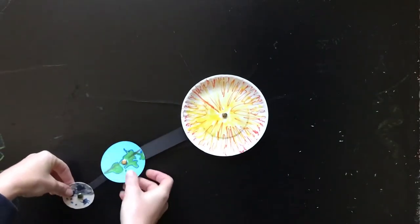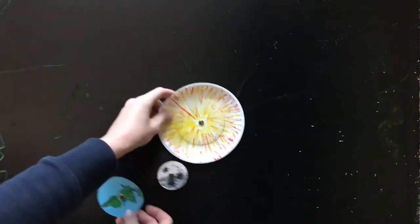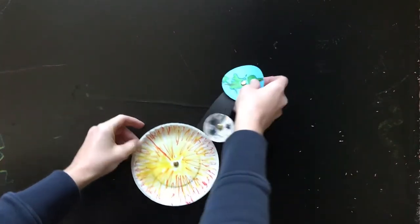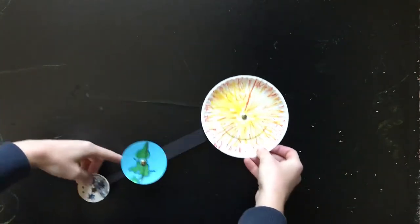Seasons happen because of the way Earth moves around or orbits the Sun. Another important part of our system is our moon which orbits the Earth.